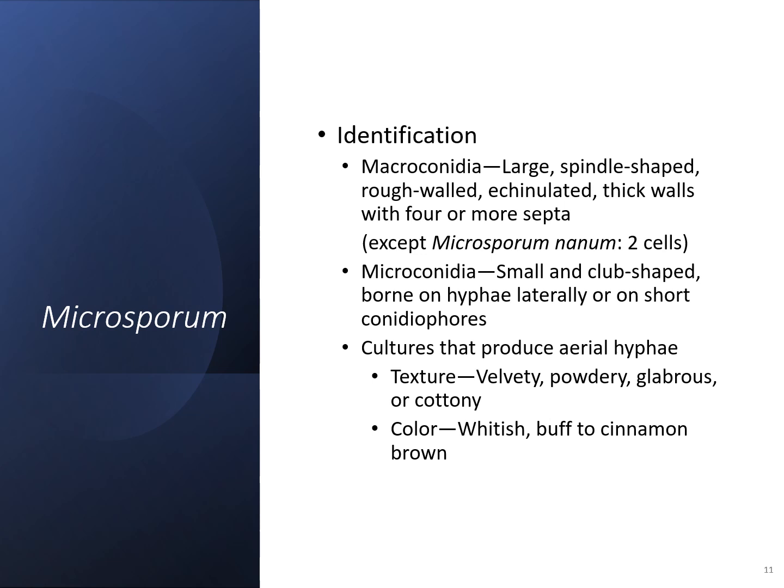Microsporium are identified based on their microscopic appearance. The macroconidia are the large ones — they are spindle shaped. They have a rough wall that is echinulate, kind of with little spikes around the edges, and it's very thick. They also have four or more septa, except for the Microsporium nanum species, which only has about two. The microconidia are very small, club shaped, and are along the hyphae attached laterally or with little short conidiophores attaching them.